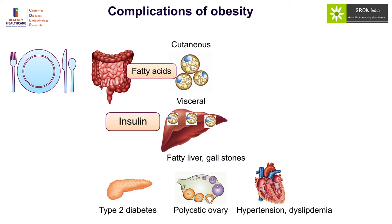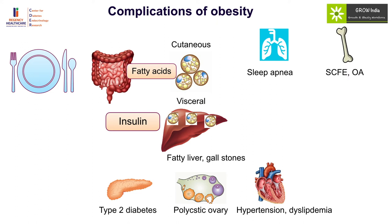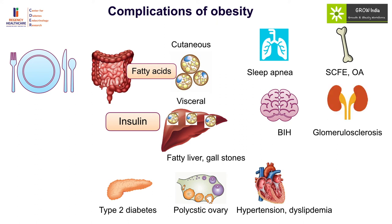There can also be direct metabolic and mechanical effects of obesity. Deposition of fat in the aerodigestive tract results in sleep apnea, which presents in children with worsening school performance, headache, early morning drowsiness, and sleepiness. There can also be slipped capital femoral epiphysis and osteoarthritis due to orthopedic problems. Benign intracranial hypertension is common due to increased intracranial pressure, and long-standing obesity has also been associated with glomerulosclerosis.